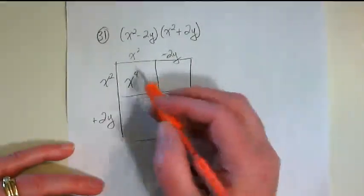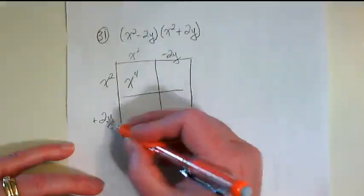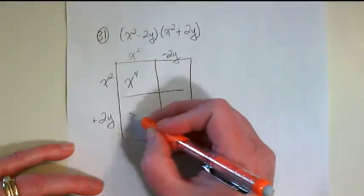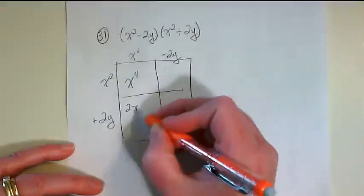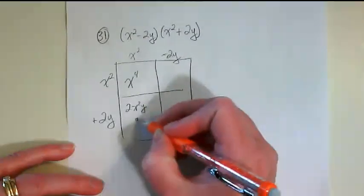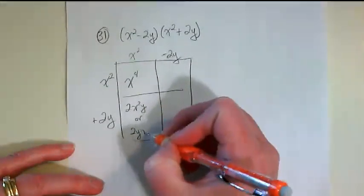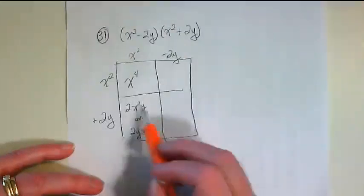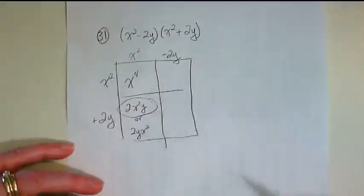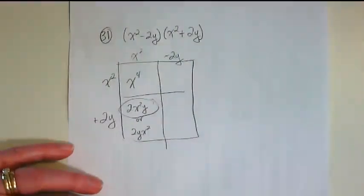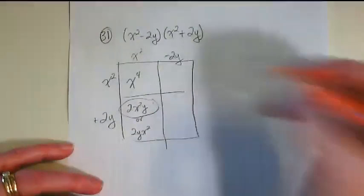thinking back to our factor rules. And then I'm going to multiply 2y times x squared, and I get either 2x squared y or 2yx squared. I tend to do it this way because I like to put them in alphabetical order, but either way is right. They both mean the same thing.